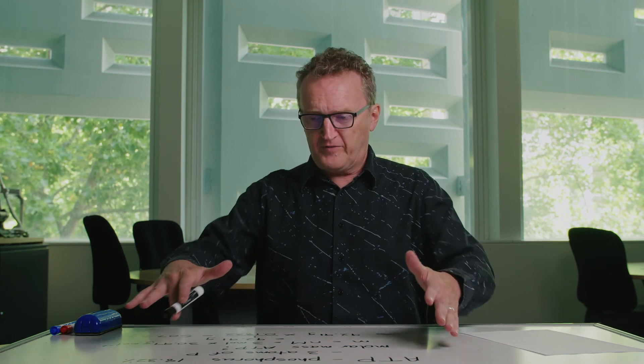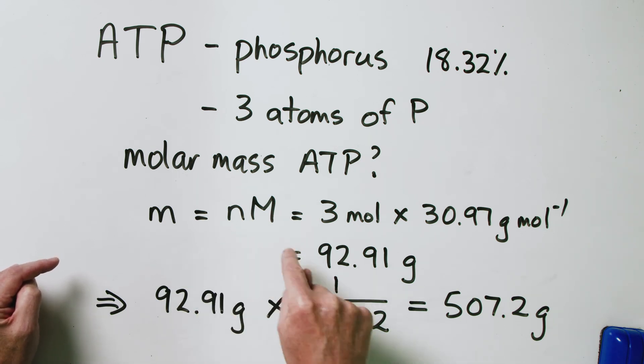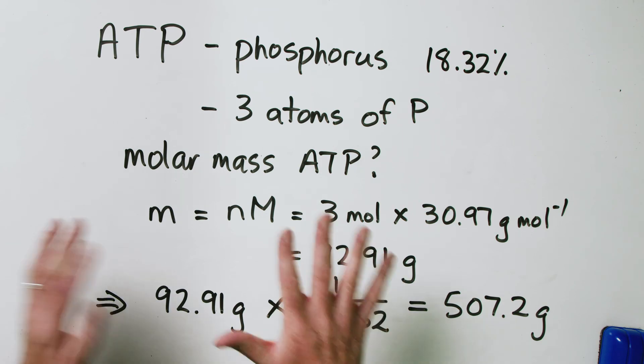That was a little bit of a curly question — not necessarily obvious where to begin, but it required thinking your way through. Notice that we're again using that one key equation in stoichiometry: the equation relating mass, amount, and molar mass. It's an extraordinarily useful equation, and as I've said in other videos, you're guaranteed to use it in nearly all stoichiometry problems. Hopefully that all makes sense. If not, hit your textbook, find similar problems, and work through those. We'll see you next time.